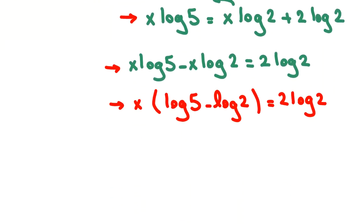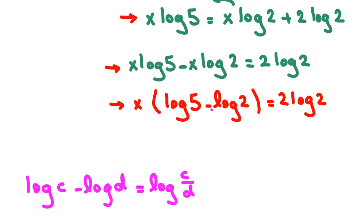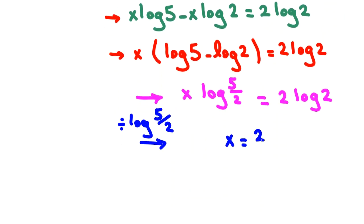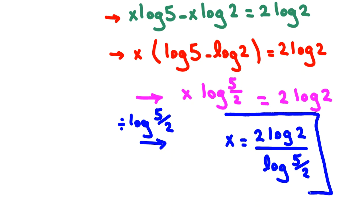We simplify using the log subtraction rule: log c minus log d equals log of c over d. So log 5 minus log 2 becomes log of 5 over 2. Dividing both sides by log(5/2), we get x equals 2 log 2 over log(5/2). That is our answer for Solution 1.